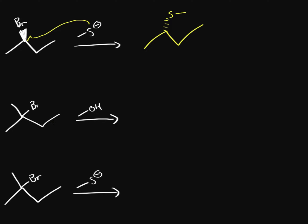In this second reaction we have a basic SN1 reaction. Why? We have a tertiary halide connected to three carbons, and we have a weak nucleophile — OH with no negative charge, so it's not very strong. For any reaction to happen, bromine would first have to leave, forming a carbocation, and only then could OH attack. The product is a tertiary alcohol.